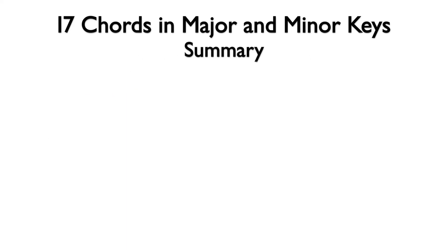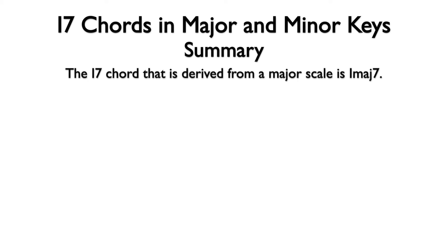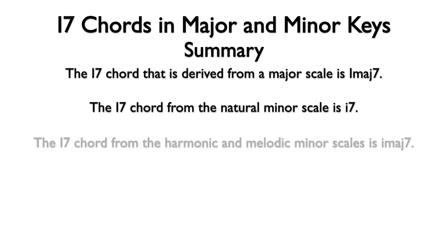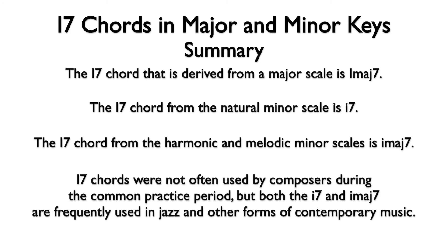Let's summarize. The I7 chord that is derived from the major scale is I major 7. The I7 chord from the natural minor scale is I minor 7. The I7 chord from the harmonic and melodic minor scales is I minor major 7. I7 chords were not often used by composers during the common practice period, but both the I minor 7 and the I minor major 7 are frequently used in jazz and other forms of contemporary music.